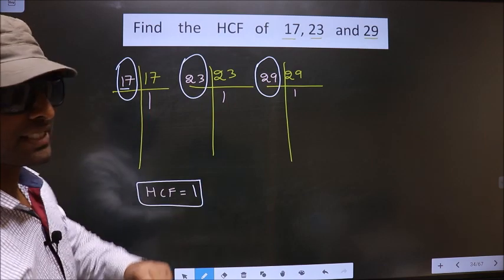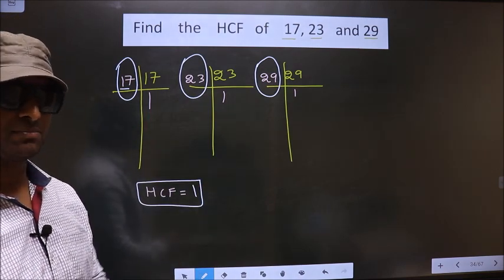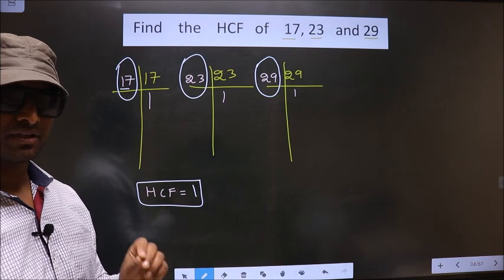Whenever no number is present in all the 3 places, you take HCF to be 1. Clear?